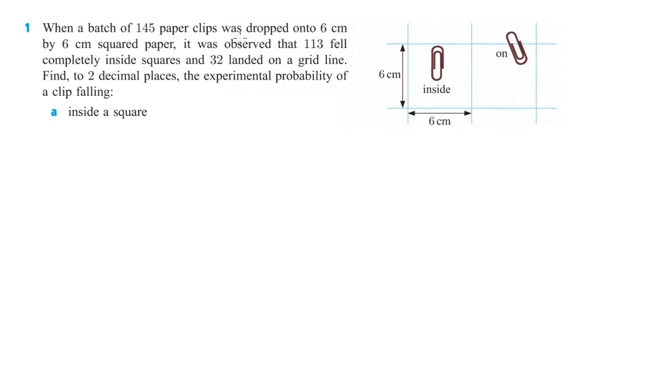It says when a batch of 145 paperclips was dropped onto 6 cm by 6 cm squared paper, it was observed that 113 fell completely inside the squares and 32 fell on one of the grids. Okay, so find to two decimal places the experimental probability of a clip falling inside a square.